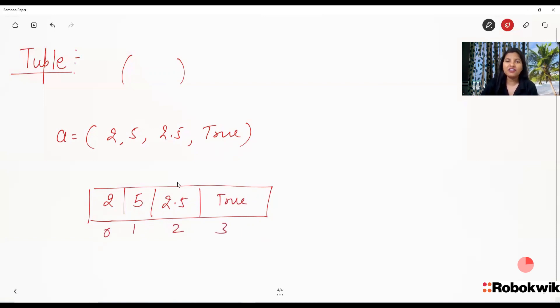So 0, 1, 2 and 3. Or it also uses reverse indexing. Or it also supports it. Minus 1, minus 2, minus 3 and minus 4.